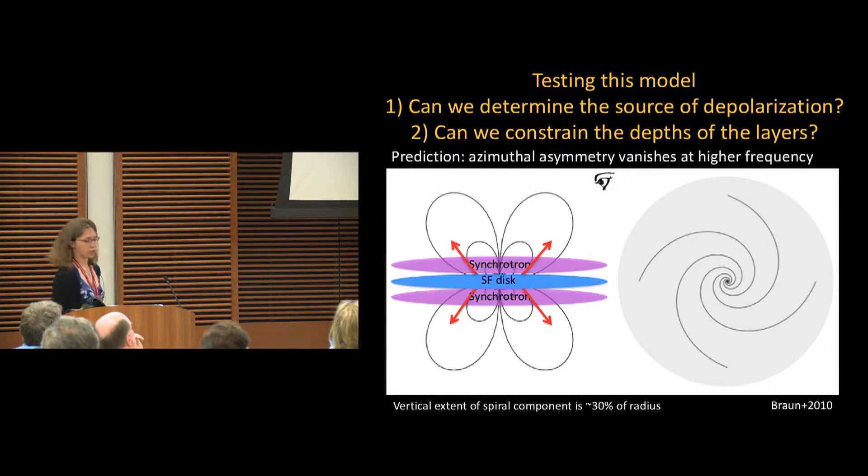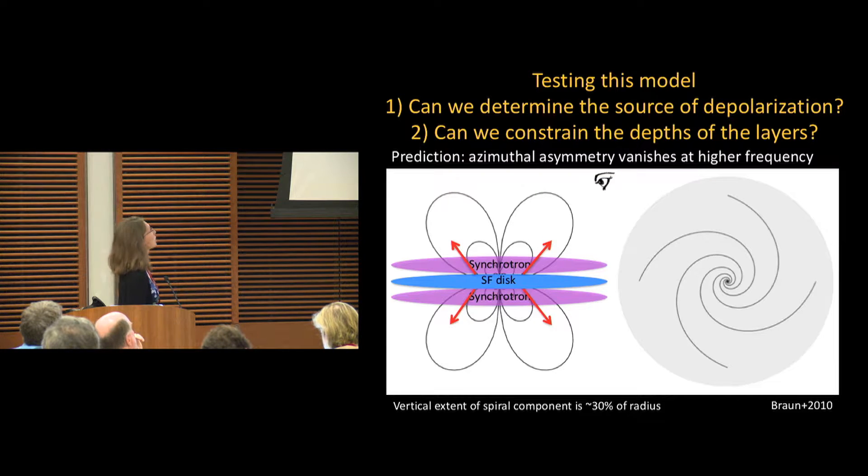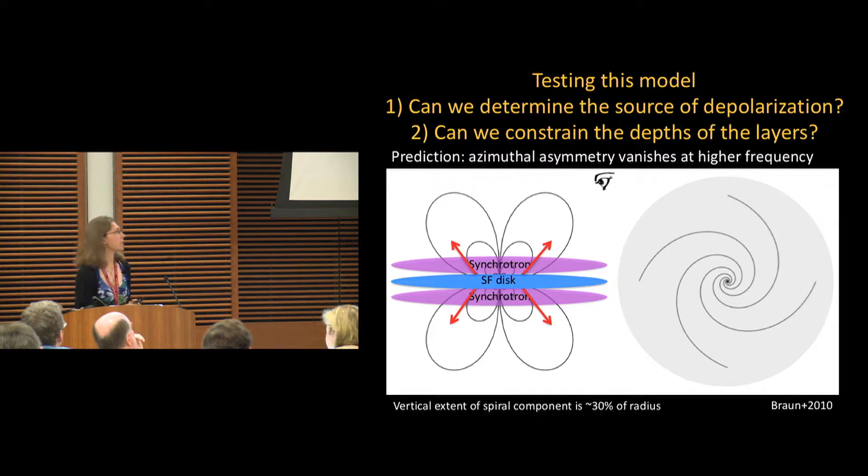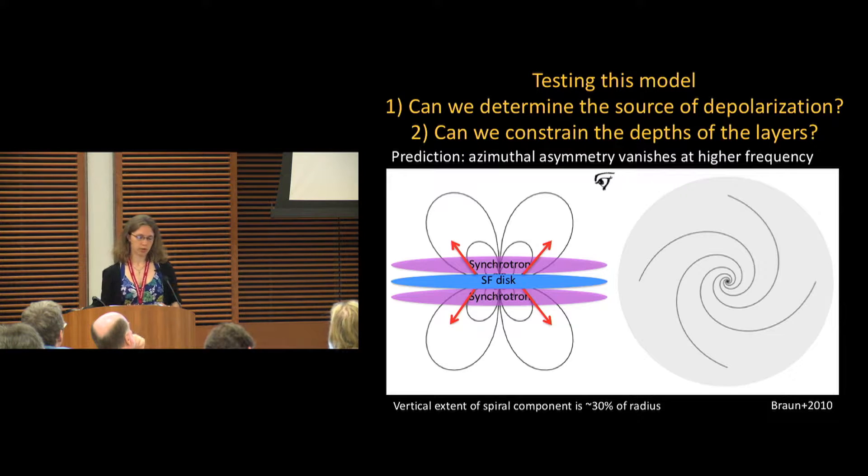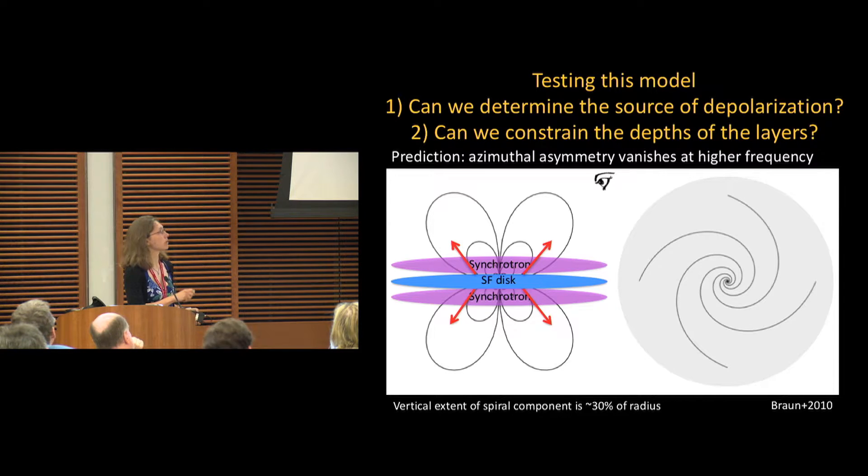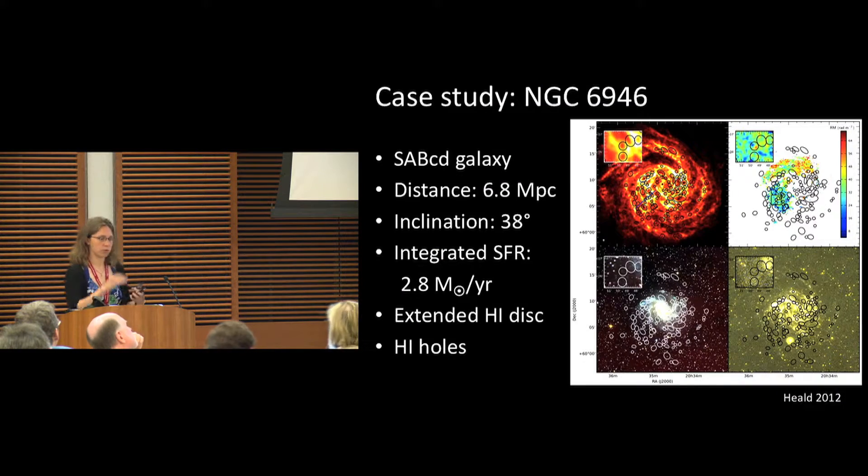What I've been trying to do is to test this model with some additional observations. We're trying to see if we can determine precisely what the source of depolarization is and constrain the layers here, the depth of the layers. What information can we learn about the physical quantities?